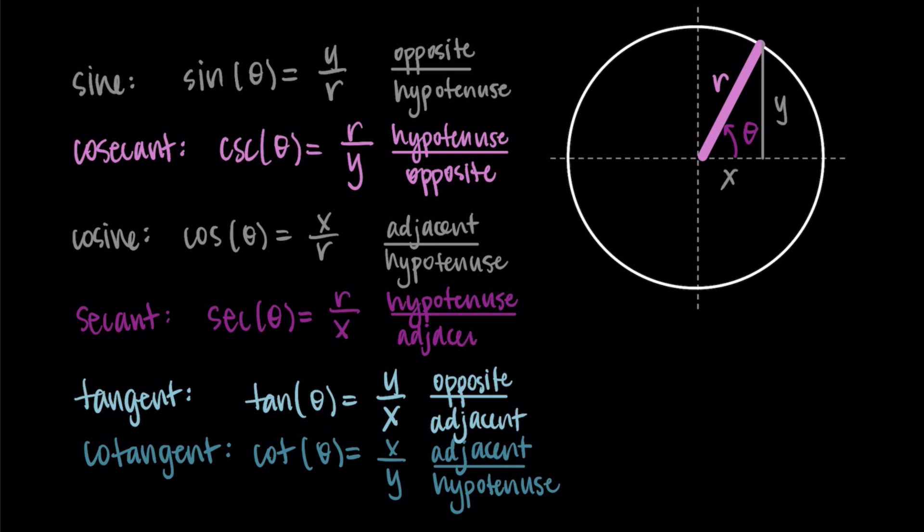And that's it. These are our full six trigonometric functions. Sine, cosine, and tangent are the three we most typically talk about. But you'll also hear about cosecant, secant, and cotangent as the reciprocals of these functions.